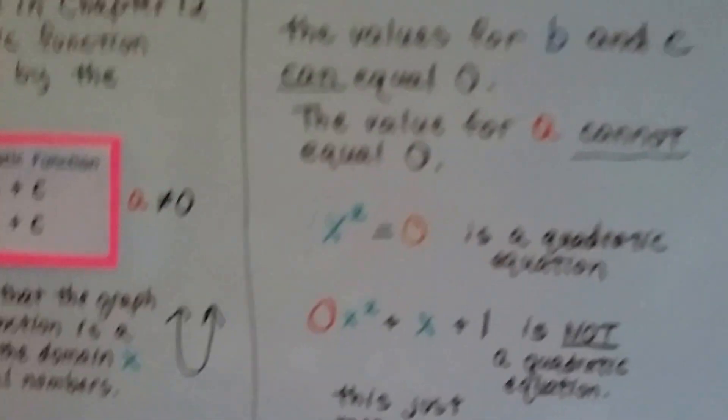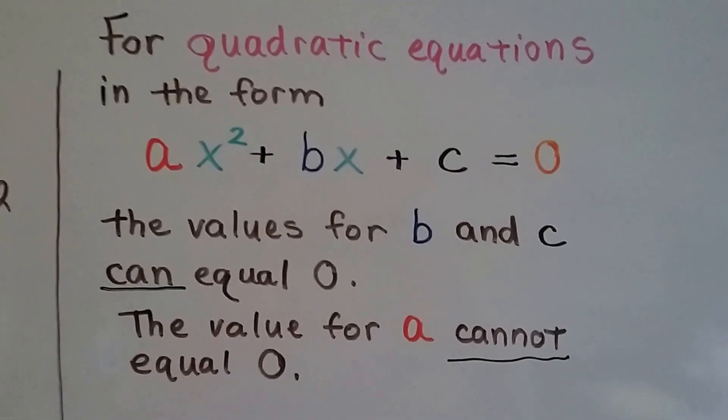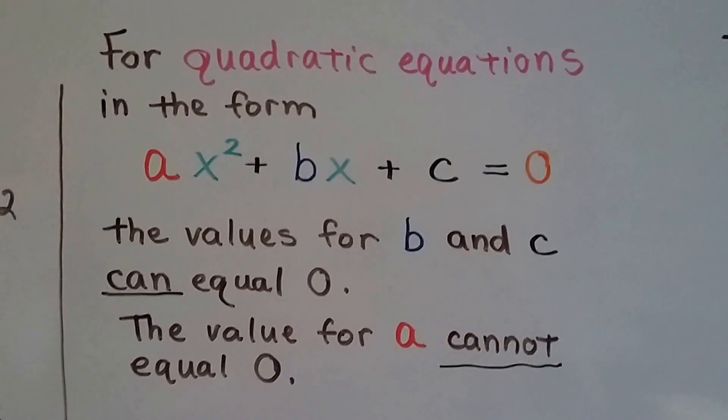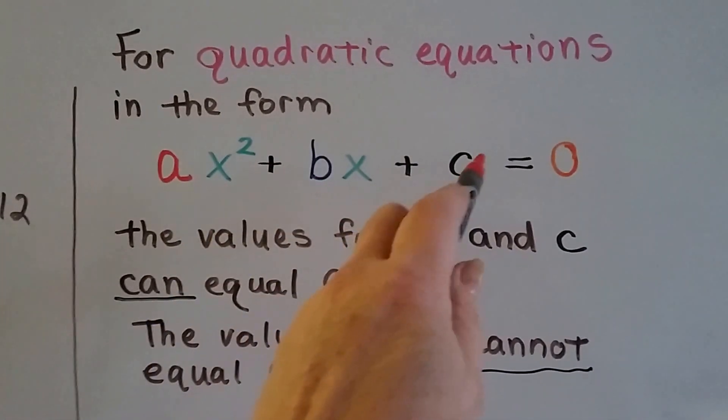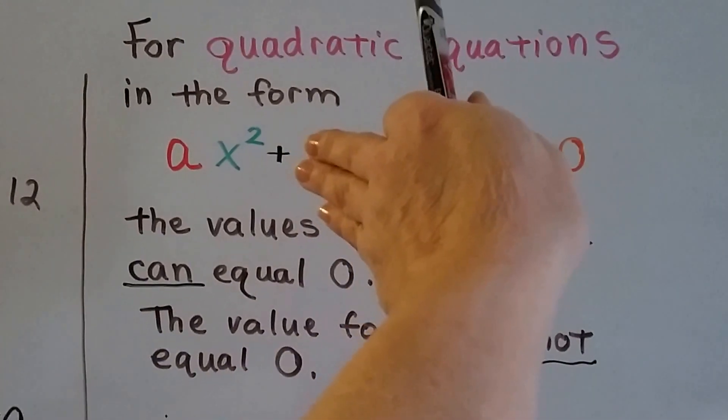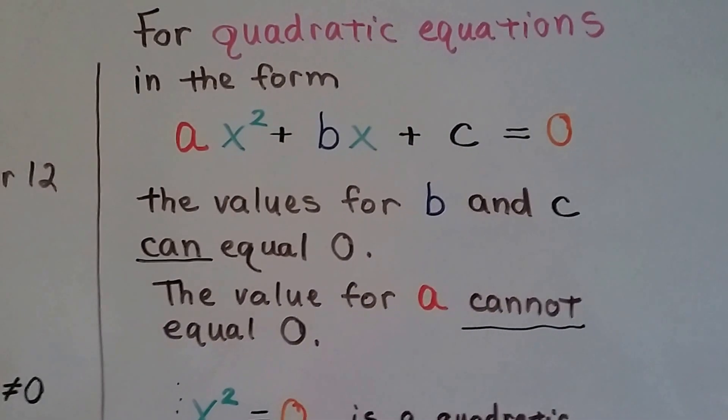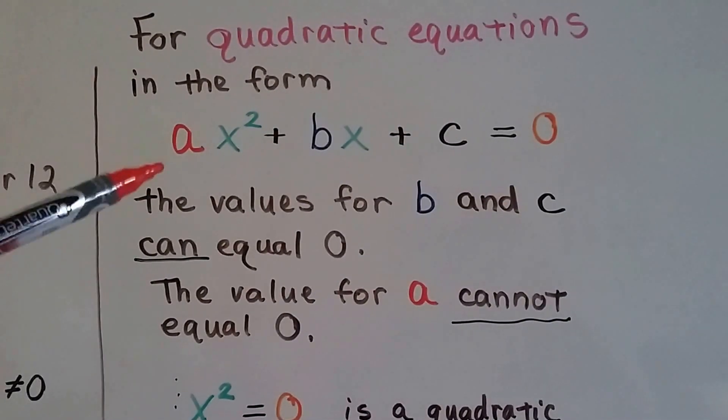So when they're in this form, the values for b and c are allowed to equal zero. It's perfectly okay. This could be a zero and that could be a zero. So we could end up with just ax squared, couldn't we?